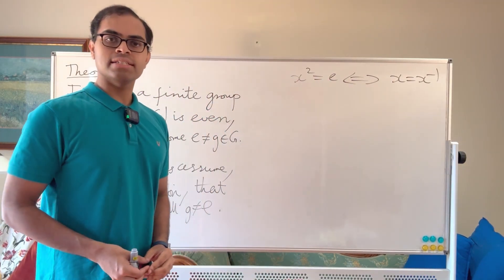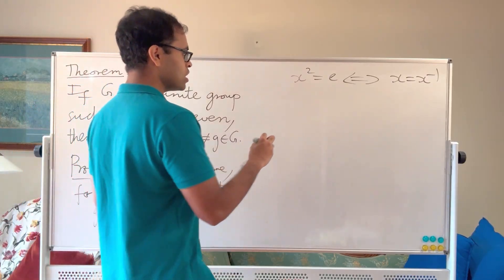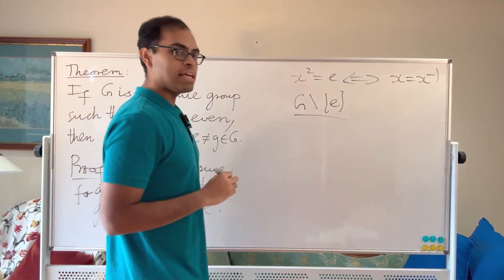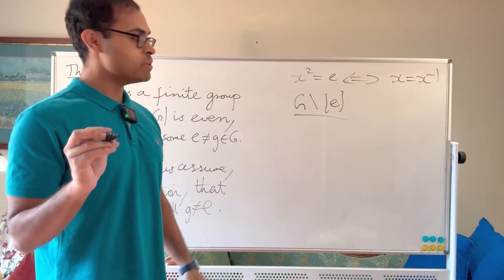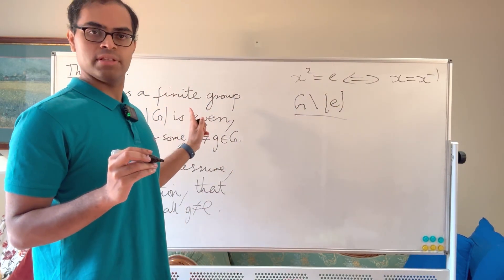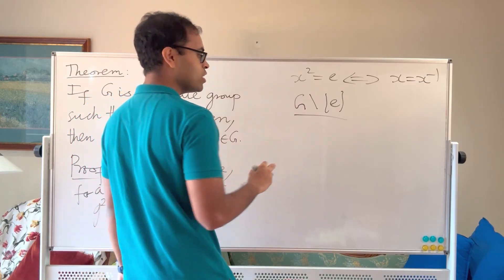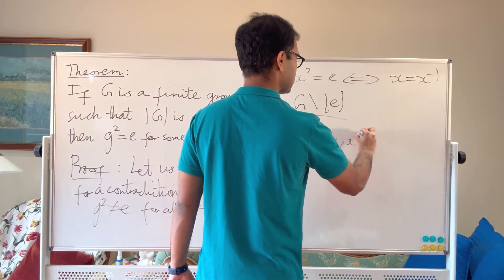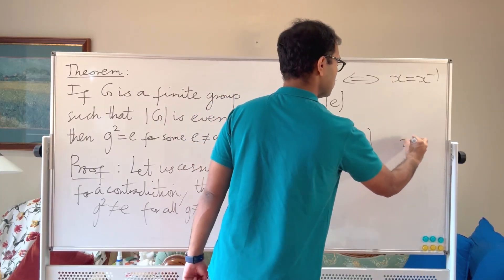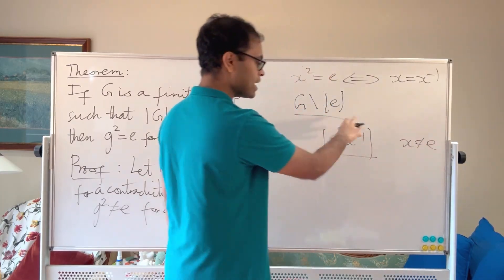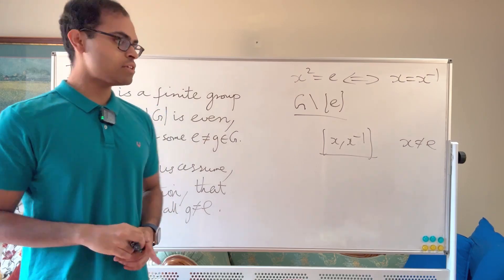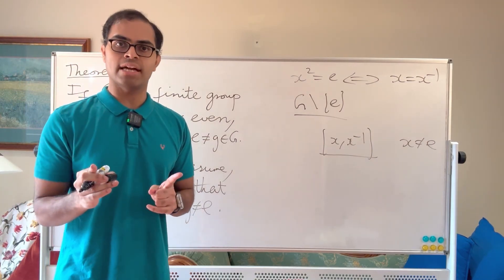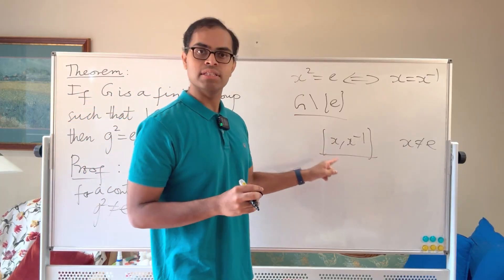So why emphasize this? We're going to look at the set G minus the identity. Notice that this set has an odd number of elements, because G had an even number of elements. Given that, we're going to consider things of the form {x, x⁻¹} for x not equal to the identity. These are two-element sets — they have two elements because we assumed for a contradiction that every non-identity element's square is not the identity, so it's not equal to its own inverse.